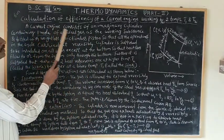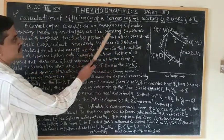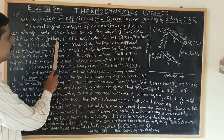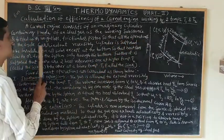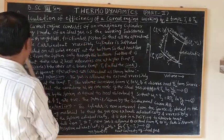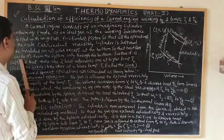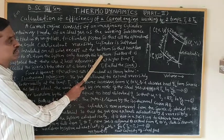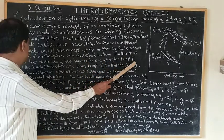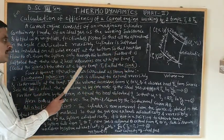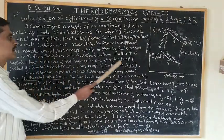A Carnot engine consists of an imaginary cylinder containing one mole of an ideal gas as a working substance, and fitted with a weightless, frictionless piston, so that all 4 operations in the cycle are carried out reversibly. The cylinder is supposed to be insulated on all sides except at the bottom, so that heat can flow to or from the system only through the bottom. There are two heat reservoirs: one at a higher temperature T2, called the source, and the other at a lower temperature T1, called the sink.